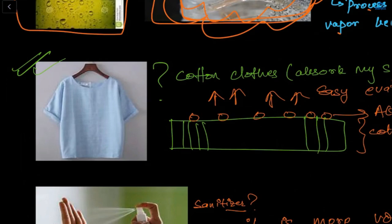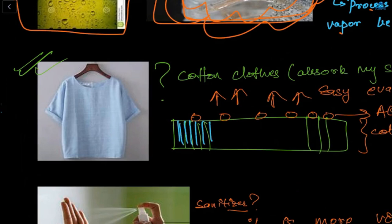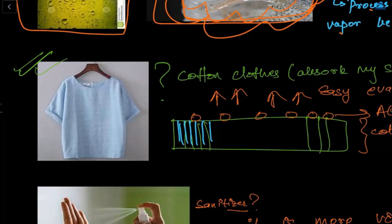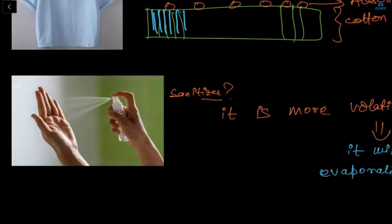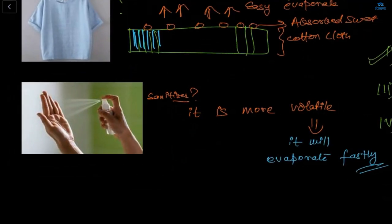Why do we wear cotton clothes in summer? Because cotton easily absorbs sweat from the body. Also, cotton clothes have fine threads which allow air to pass through more easily compared to woolen clothes. If more air is flowing, the evaporation process becomes easier and faster — that is why we wear cotton clothes in summer.